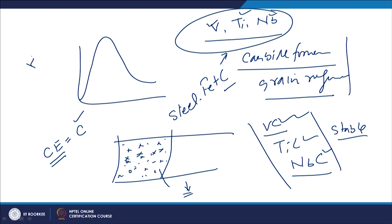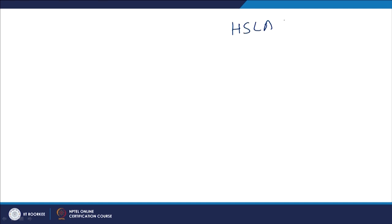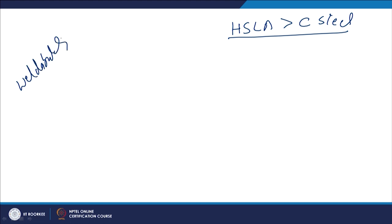Compared to carbon steels, HSLAs which form these carbides — which do not decompose during welding — offer better weldability than carbon steels. In general, HSLAs offer better weldability than simple or plain carbon steels.